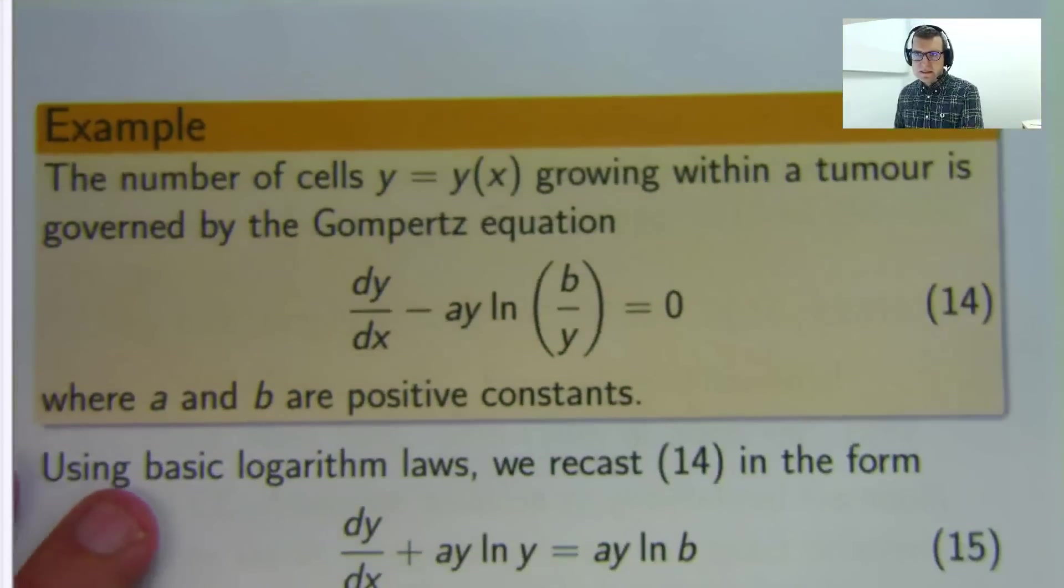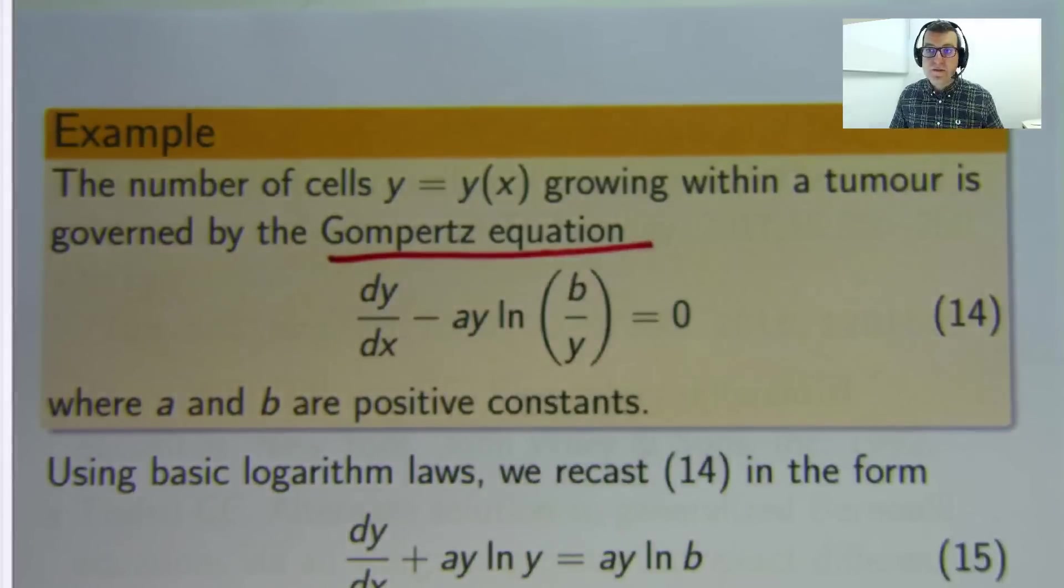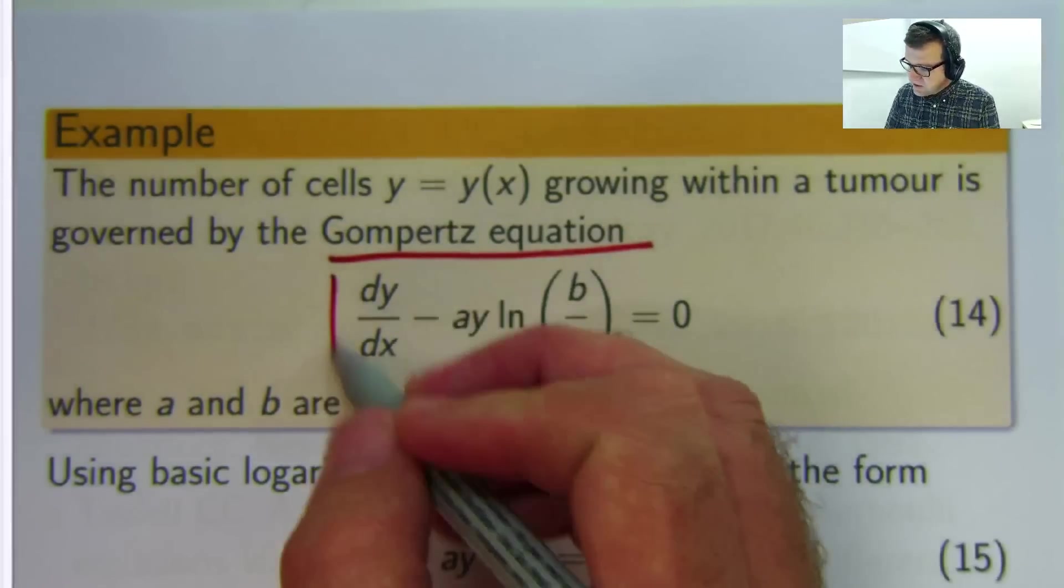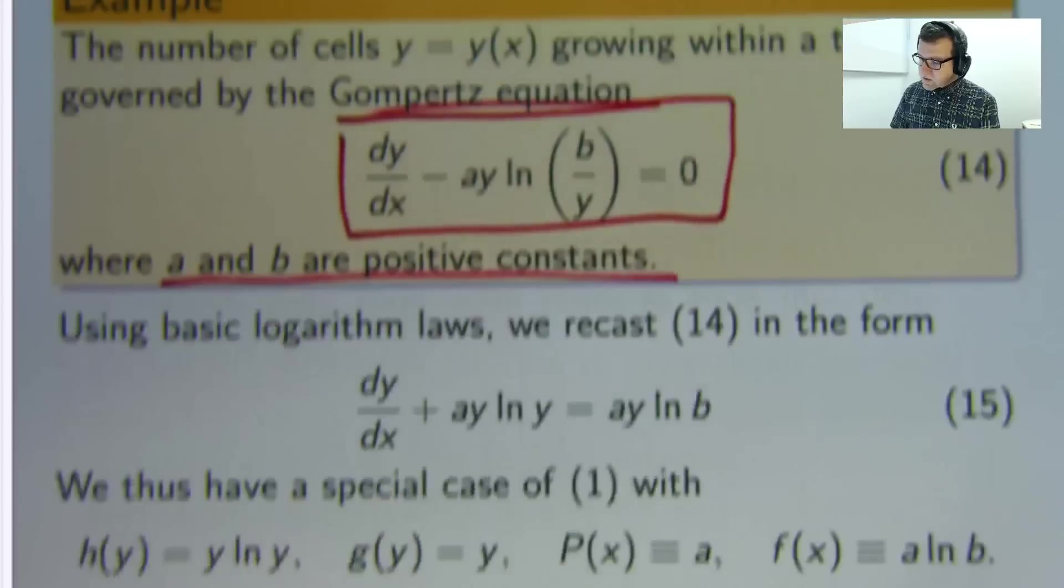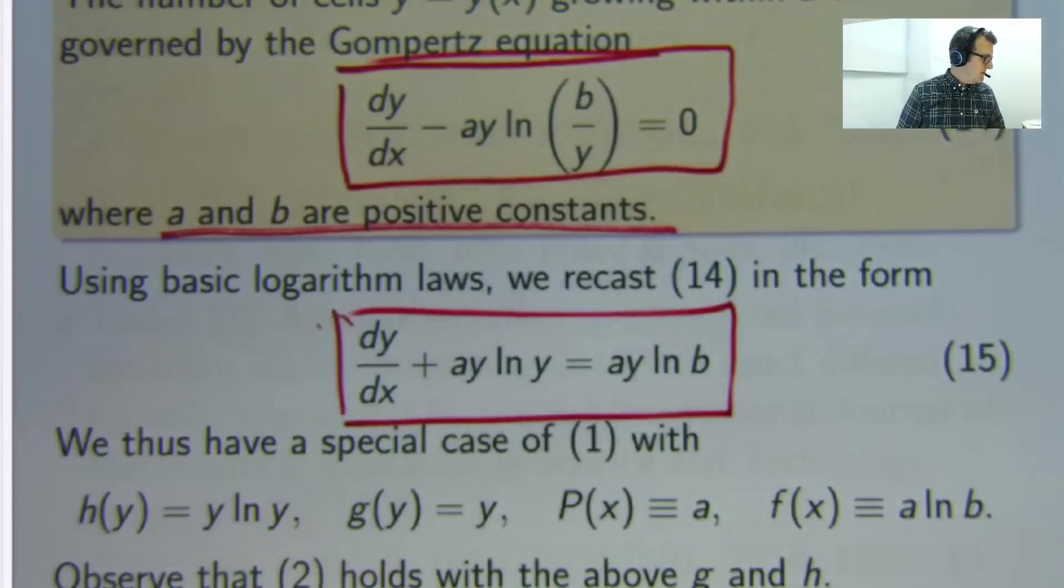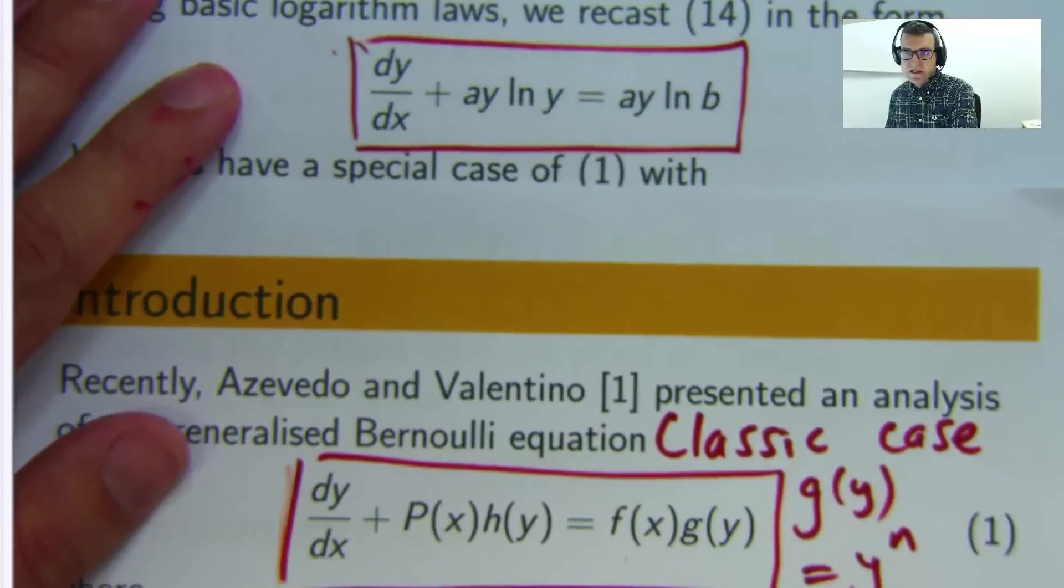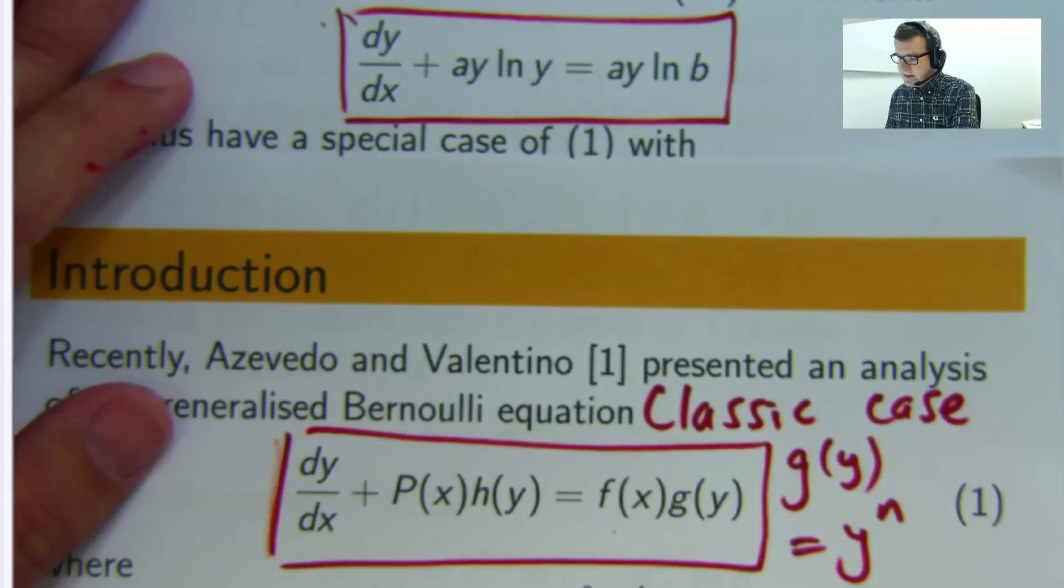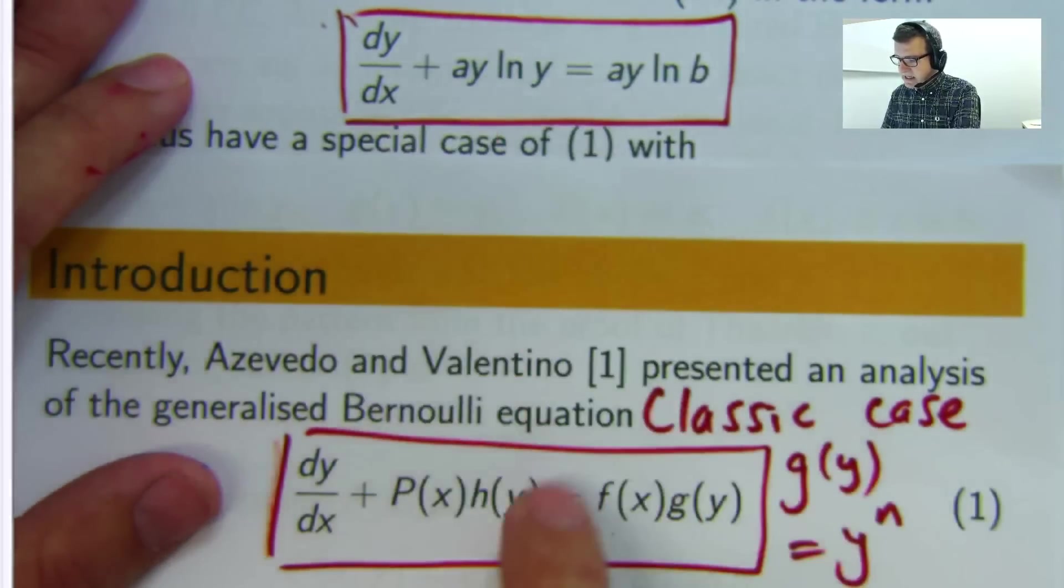Little example now. Some of you may be interested in the application of mathematics. This Gompertz equation is from Biomath. So here it is. It's a first order problem. A and B are positive constants here. You can recast the problem into this form which is a special case of equation, let's see if I can fit it in, equation 1. So you can see you know P of X is going to be say H of Y is going to be Y log Y etc.